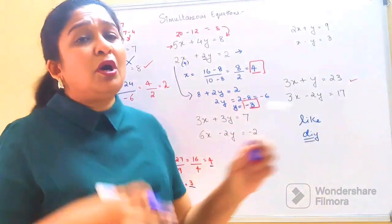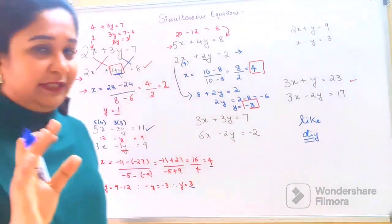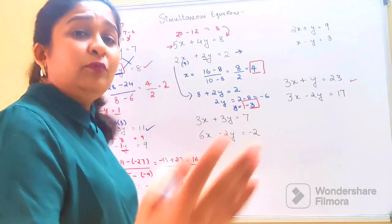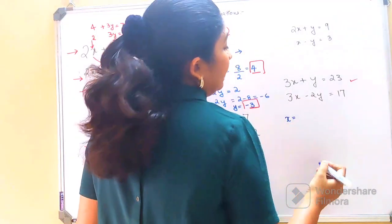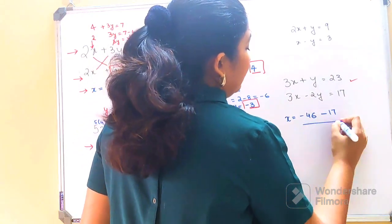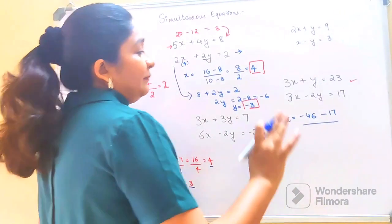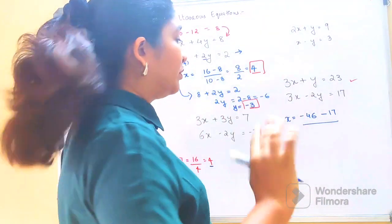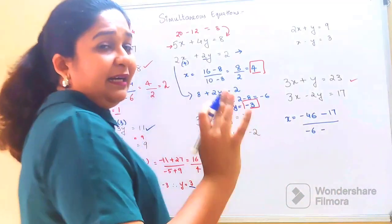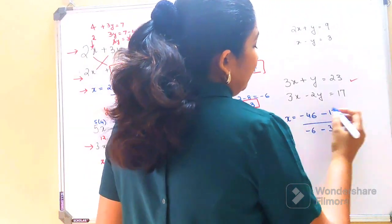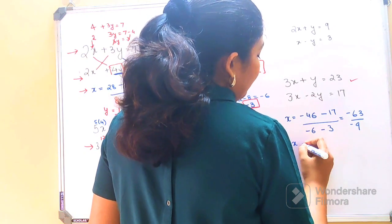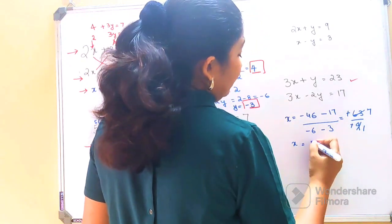Now let's do an example where the constants are a bit larger. Here again we find x: minus 2 into 23 gives minus 46, minus 1 into 17 gives 17 — that's the minus sign between the two values. Then: minus 2 into 3 gives minus 6, minus sign, and 3 into 1 gives 3. This comes out to be minus 63 minus negative 63 — upon minus 9. Cancelling, x equals 7.